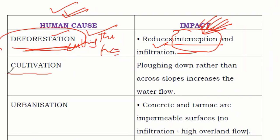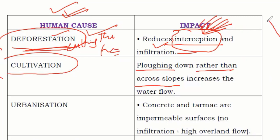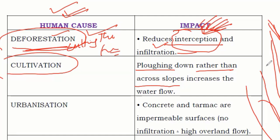Another human cause is cultivation — growing crops. Plowing fields down the slope rather than across the slope increases water flow. In hilly areas, farmers can create terraced fields across the slope to slow and stop water flow. But if fields are plowed straight down the slope, water flows faster downhill, and this method of cultivation by humans becomes another cause of flooding.